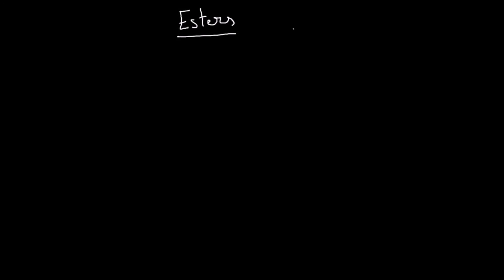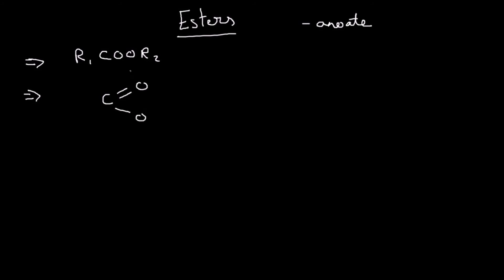Esters always end in '-anoate'. The general formula of esters is R1-COO-R2. Structurally, you have C double bond O with an oxygen attached — that's the COO — and this oxygen is attached to R2 while the carbon is attached to R1. There's a carbon chain on each side, a carbonyl group, and an oxygen attached to the carbonyl group.